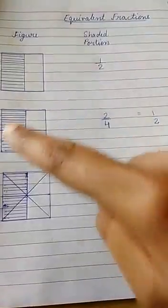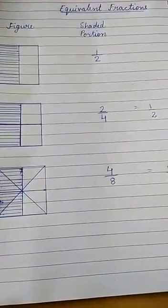Today, we are going to learn equivalent fractions. In all the above figures, half portion of the square are shaded.